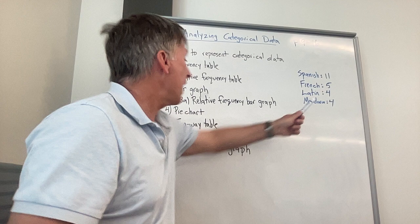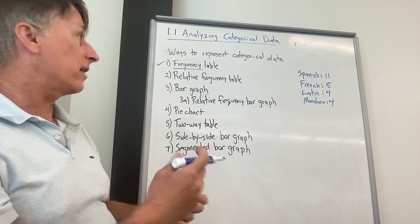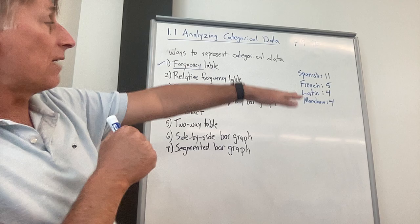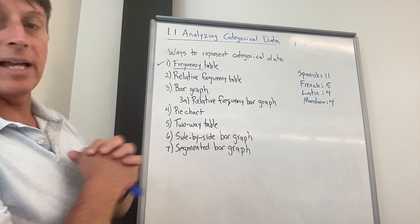This actually has a name. It's called the frequency table. You're going to hear this term frequency a lot in this course. Frequency just means a number of things, a count of things. So when you look at this, this actually is a frequency table. It's telling us that 11 students took Spanish. 11 is a frequency. Five students took French. Five is a frequency. So one very common way to represent categorical data is with something called a frequency table.